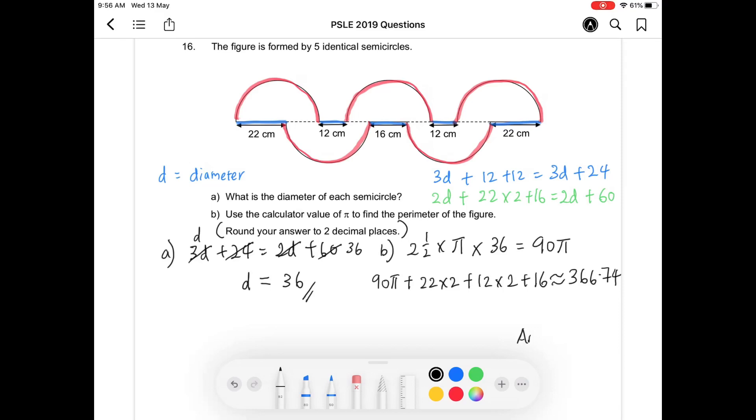Do not forget to write down the units of measurement. For part A will be 36 cm and then for part B, it should be 366.74 cm as well.